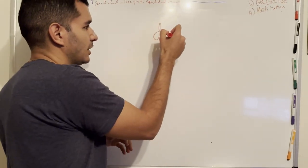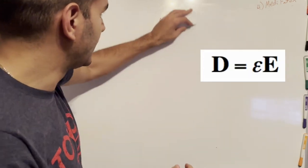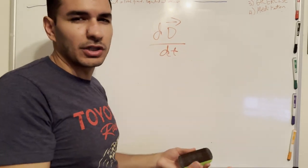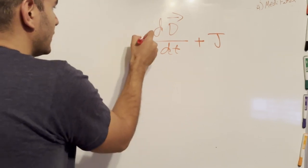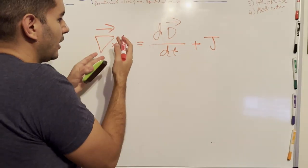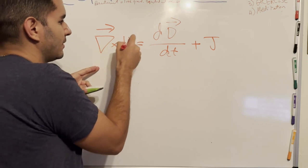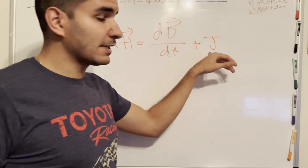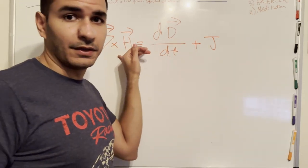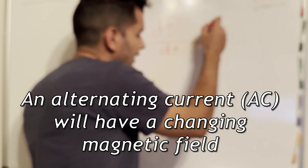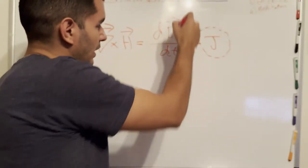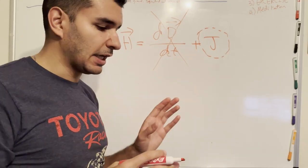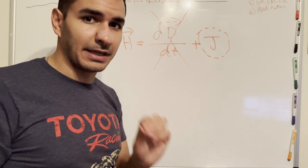The other side of the coin is the Ampere-Maxwell Law, which says the reverse: if you have a changing electric flux — which you can think of as a changing electric field — plus some current density J, that's going to equal a curl of the changing magnetic field H. So a changing electric field induces a changing magnetic field, and a constant current J also induces a magnetic field, but that magnetic field will be static.